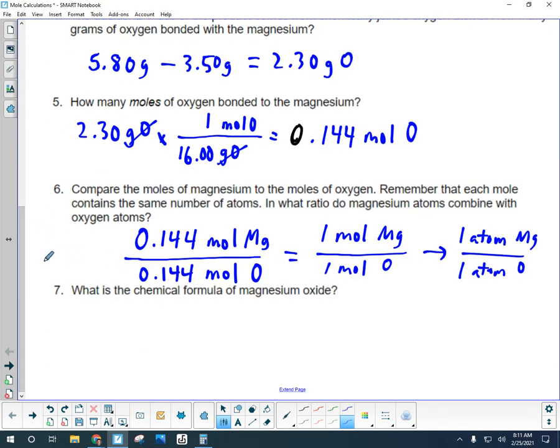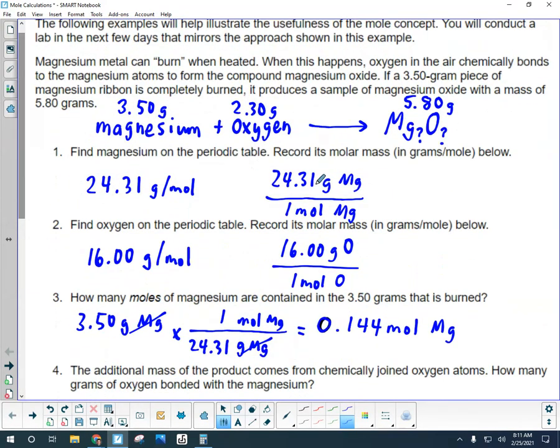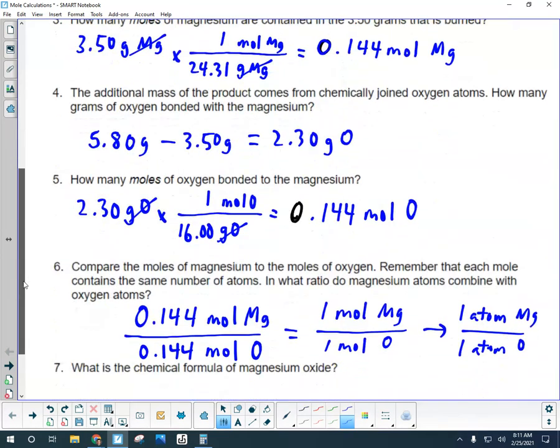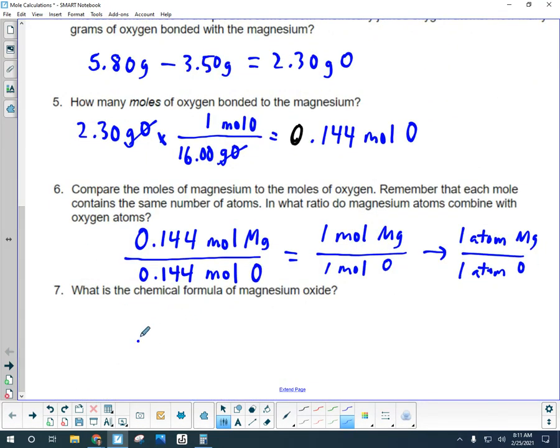So the formula, the chemical formula, which we said we didn't know coming in, must be 1 and 1. We have good evidence here that the empirical formula is MgO. Meaning Mg1 O1, but of course we don't write it like that.